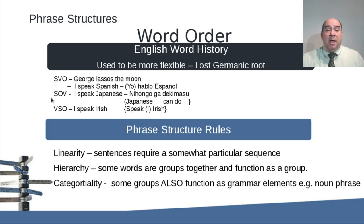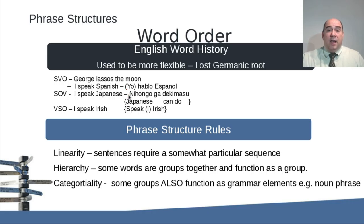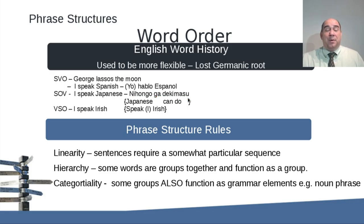Subject-object-verb means the subject comes first, then the object, then the verb at the end. For example, in Japanese you would say 'I Japanese speak.' You don't even need to include the subject — it's understood. You can just say 'nihongo ga dekimasu' — 'Japanese can do.' That's the other popular form.